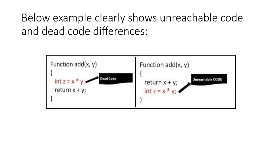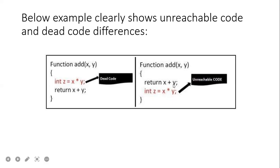An example of a code issue: here is a function of addition, but the developer has added x multiplied by y, which is of no use — this is called dead code. Similarly, after the completion of the addition operation by calling the add function, the developer has added a multiplication syntax which is unreachable — that is called unreachable code. Such types of issues are resolved in unit testing, which is done at both the developer level and the tester level.